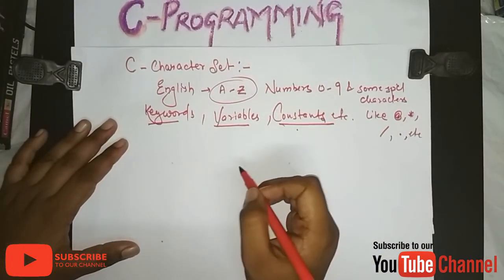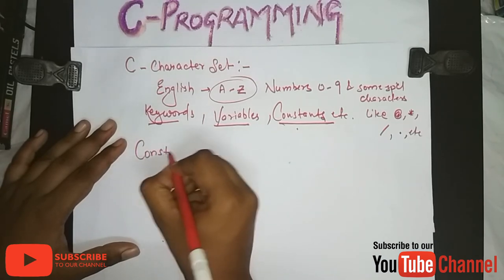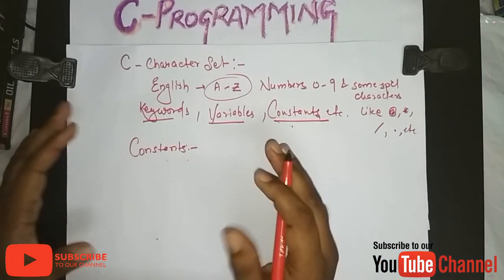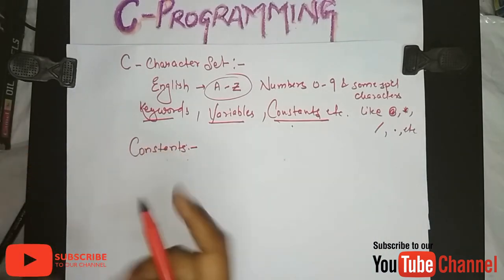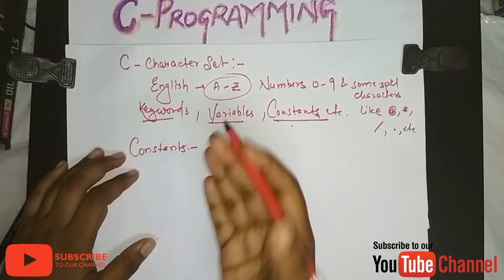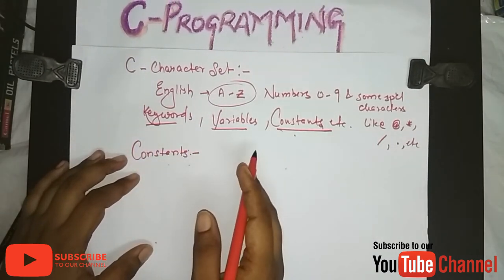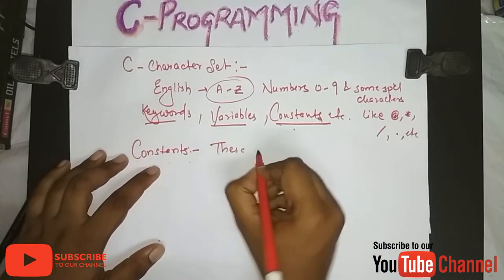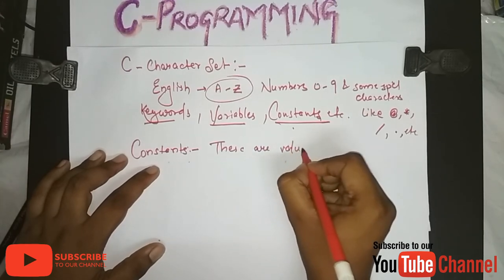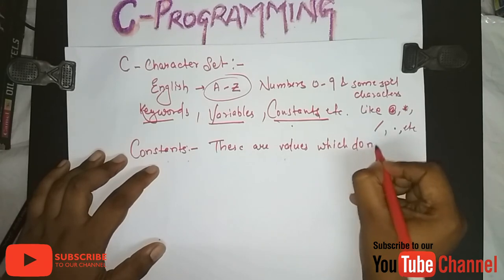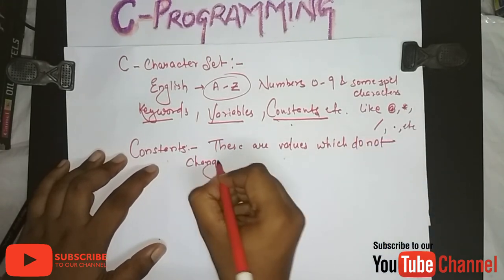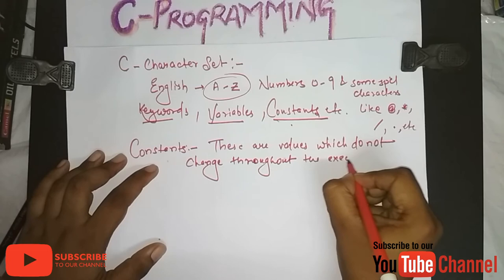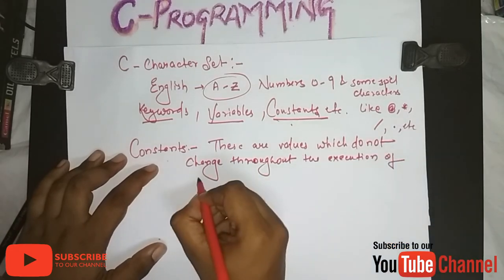Let us begin with constants. What are constants? In general English, a constant is something which does not change. It is also the same here — these are values which do not change throughout the execution of a C program.